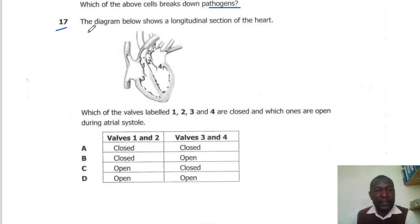Question 17. The diagram below shows the internal section of the heart. Which valves labeled 1, 2, 3 and 4 are closed and which ones are open during auricular systole? During auricular systole, 3 and 4 will open while 1 and 2 will close. So the correct answer here is B.